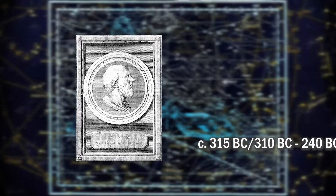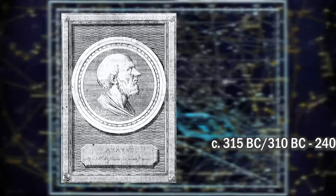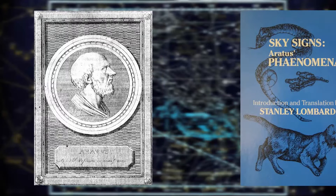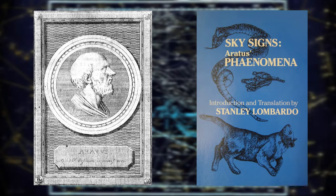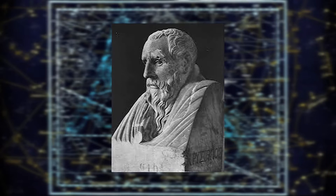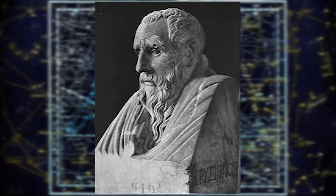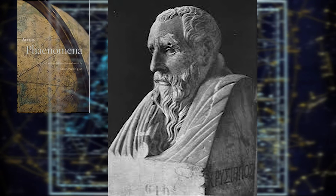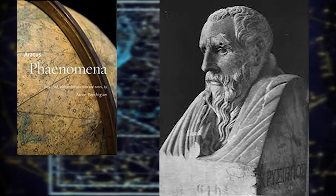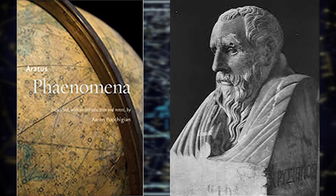Aratus (315 or 310 BC to 240 BC) was a Greek didactic poet. His major extant work is his hexameter poem Phenomena, which describes the constellations and other celestial phenomena. The first half of this poem is a verse setting of a lost work of the same name by Eudoxus of Cnidus, so it is certainly one of the earliest descriptions of the constellations in place at the time. It is not astronomically accurate, because that was not its purpose. His poem was very popular in the Greek and Roman world, as proved by the large number of commentaries and Latin translations, some of which survive.